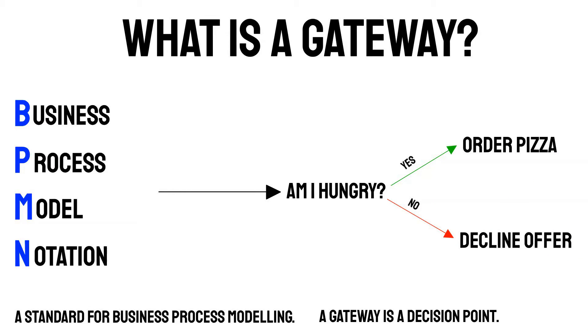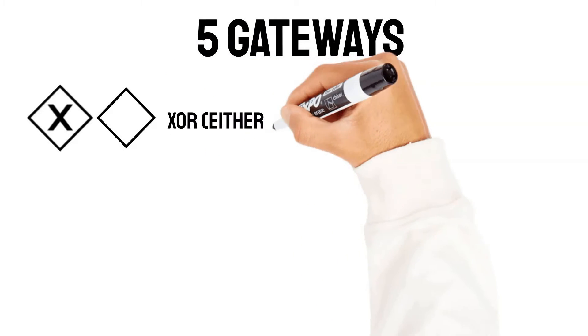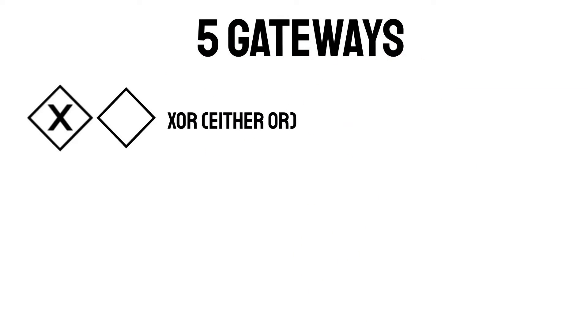After clarifying what a BPMN gateway is, let me show you which BPMN gateways we have within the BPMN standard. There are mainly five BPMN gateways. The first one is the either-or gateway, also called XOR gateway. There are two possible forms on how to model this gateway. It's also called the default gateway because it's so commonly used.